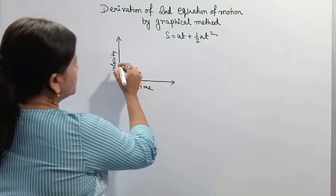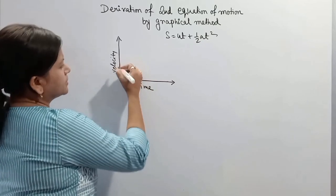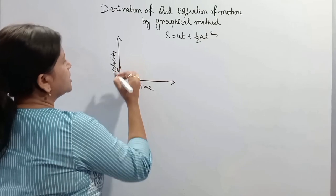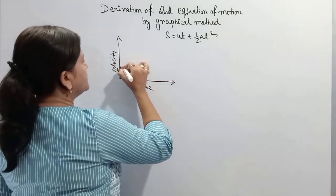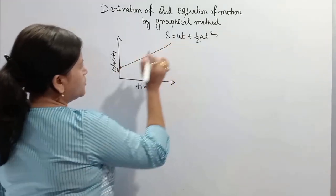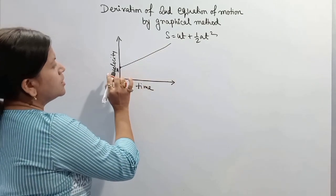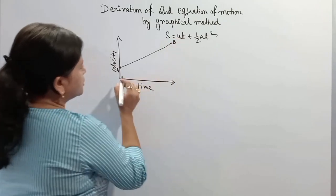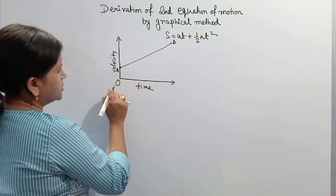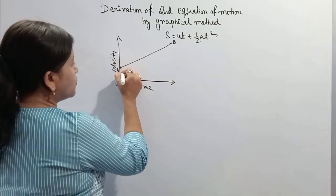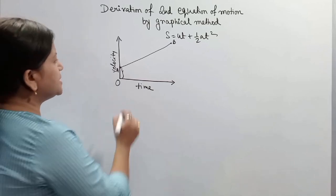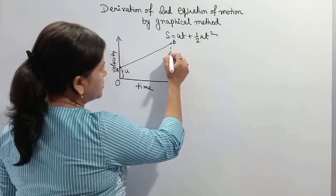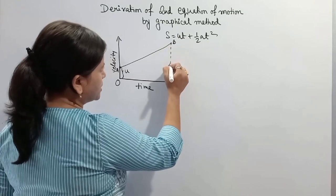Now suppose a body is moving with initial velocity u and final velocity v. The body starts moving from point A and reaches point B. This is O. Now this OA represents initial velocity u.